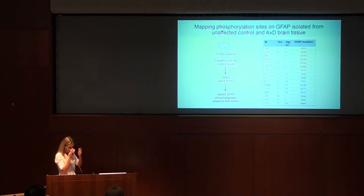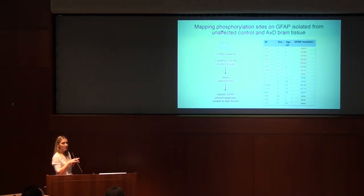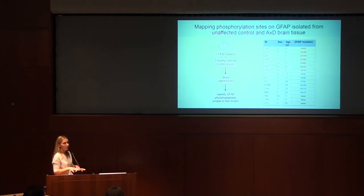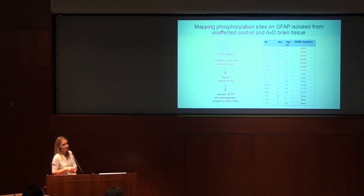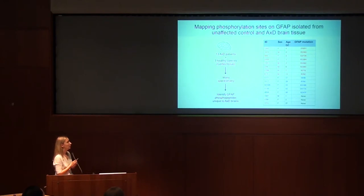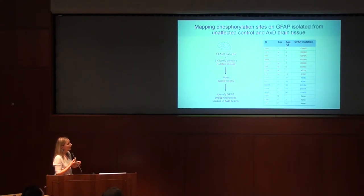When I started my lab, we looked at all intermediate filaments and what was known. Albie's group and his collaborators had the most ground to stand on — this was the best model system to study aggregation. Thanks to Albie and a meeting two years ago, we were able to acquire 13 post-mortem samples from Alexander disease patients banked by the Maryland Brain Bank. More than half were patients who died young of the disease, and some had lived up to age 50.